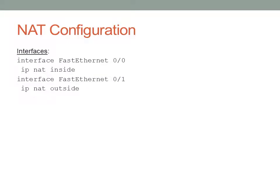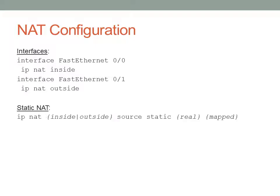On interfaces, you'll want to specify an inside and an outside interface. For static NAT, you use the command 'ip nat inside source static' followed by the real and mapped address. If you say NAT inside, you're mapping a private host to a public address — the real host is private and the virtual address is public. If you say IP NAT outside, it goes the other way: the real host is public and you're mapping it to a virtual private address.